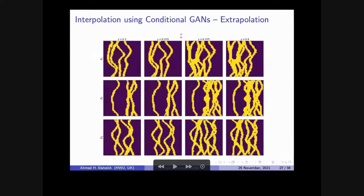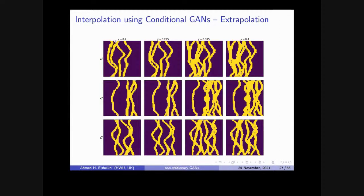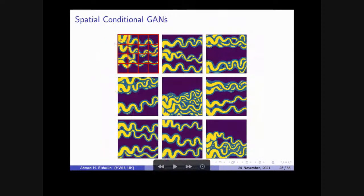We further explored extrapolation properties. The training data had proportions 0.25 and 0.3, so we generated at 0.2 and 0.25. Again, good results — but not too good to be true. If we pushed to extreme extrapolation we fail, and we are happy to fail because we know that neural networks are not very good extrapolators, though they are good interpolators. We then asked ourselves: we can do global conditions like a global proportion of 0.2 — can we now tackle the harder problem of non-stationary data with spatial conditions?